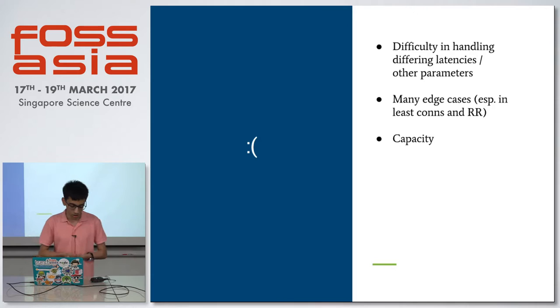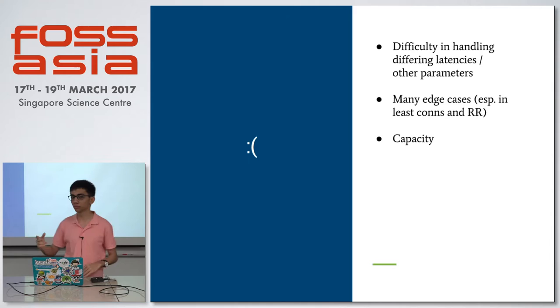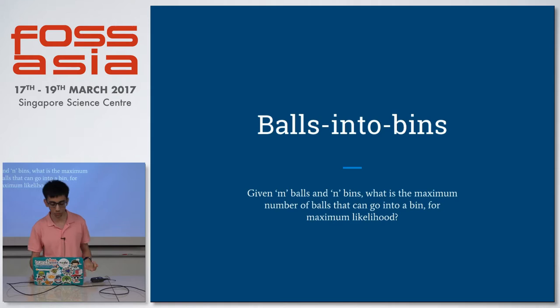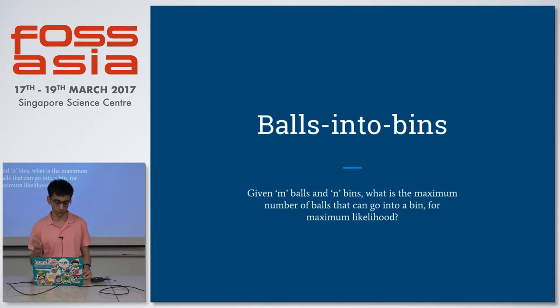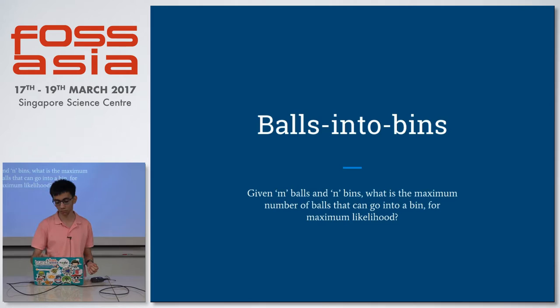This is actually reducing the capacity of your usable space. I'm going to analyze why this happens through one of the most simple and well-known problems in probability theory: the balls into bins problem. Given m balls and n bins, what is the maximum number of balls that can go into a bin under maximum likelihood? Obviously you could randomly put all m balls into one bin, but that's not likely — so what's the maximum in the maximum likelihood circumstance? Here, balls are your requests and bins are your servers.